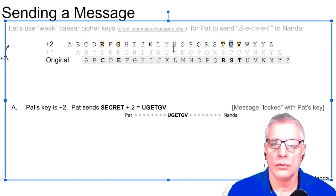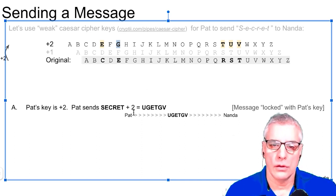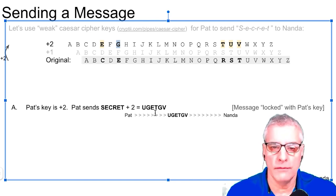become U-G-E-T-G-V. So the S becomes the U, the E becomes the G, and so forth. So secret plus two ends up being U-G-E-T-G-E-V. So it's now locked with Pat's key, if you will, and Pat sends U-G-E-T-G-E-V across the line.